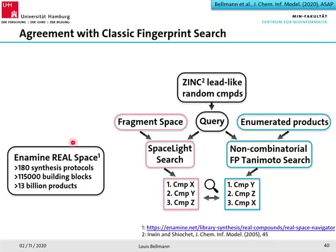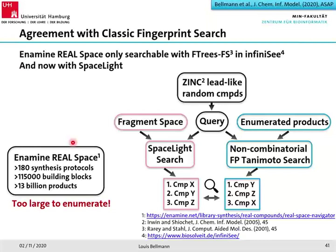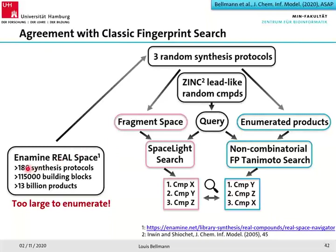As a fragment space we would have liked to use the full Enamine REAL Space with over 30 billion products, but a classic fingerprint search on that space is impossible since you cannot enumerate it. Instead, from the 180 synthesis protocols we randomly picked three with small product spaces that were small enough to enumerate — three subspaces of the Enamine REAL Space.